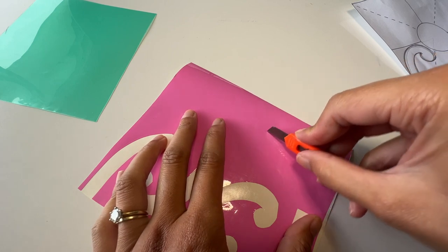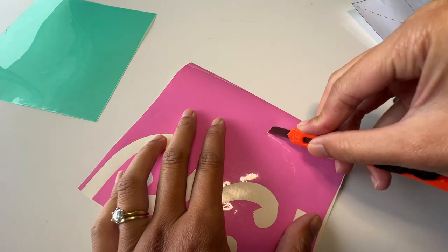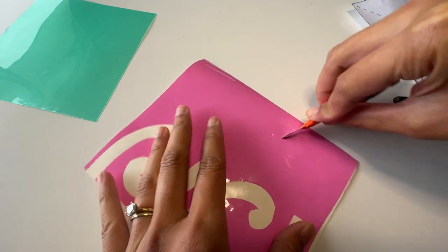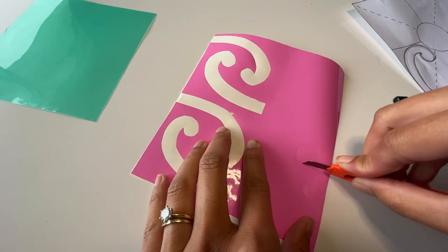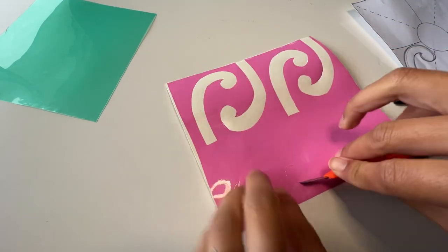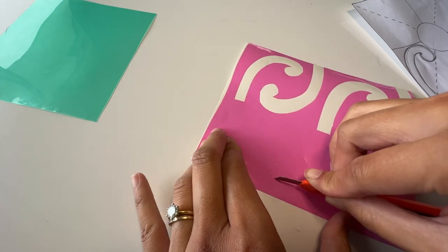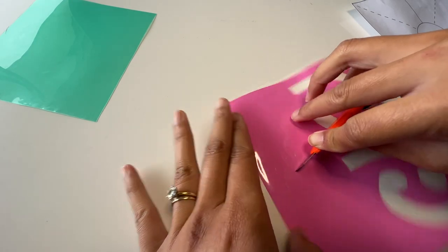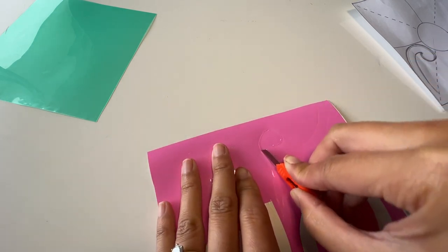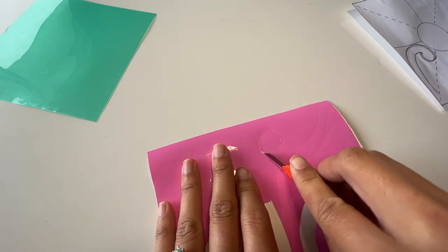Now you might have to shimmy around and move around so you can see where those lines are. But you just want to carefully spin your vinyl around so you can get those curves. And you don't want to push too hard because you don't want to go right through the vinyl and the piece of backing paper that's on it.